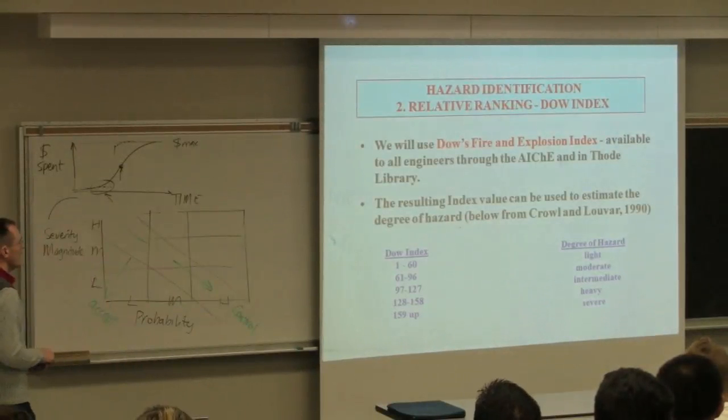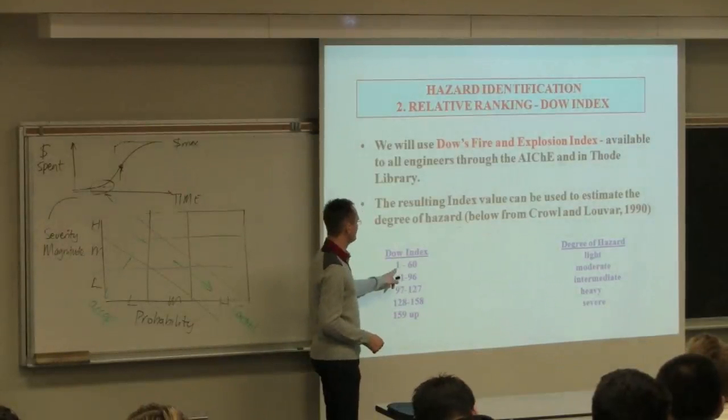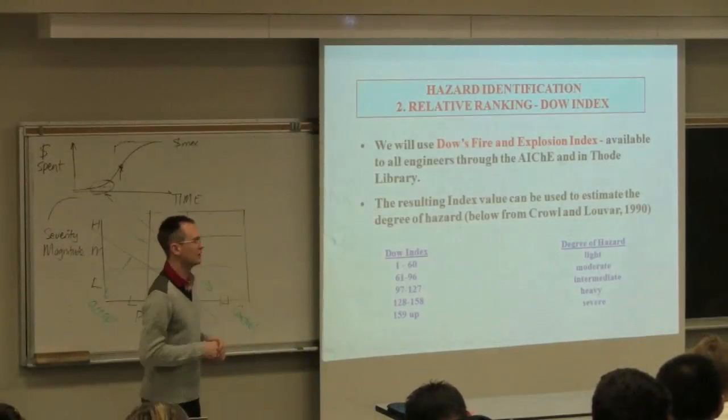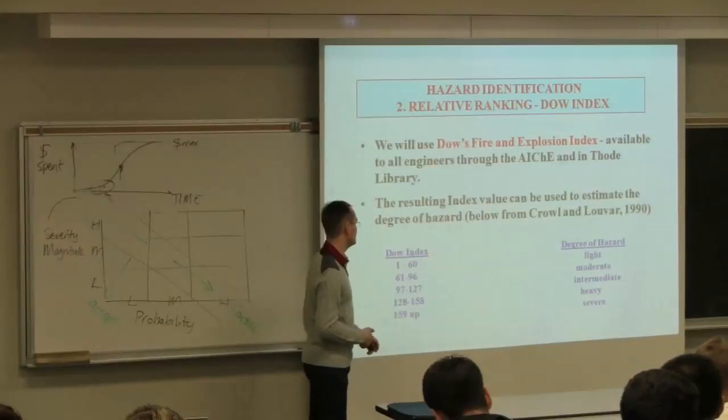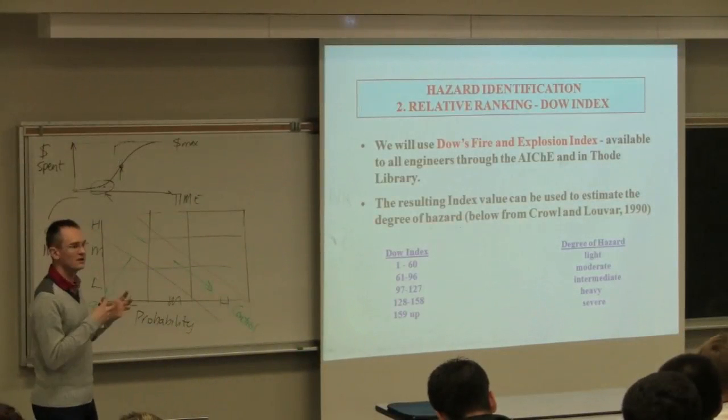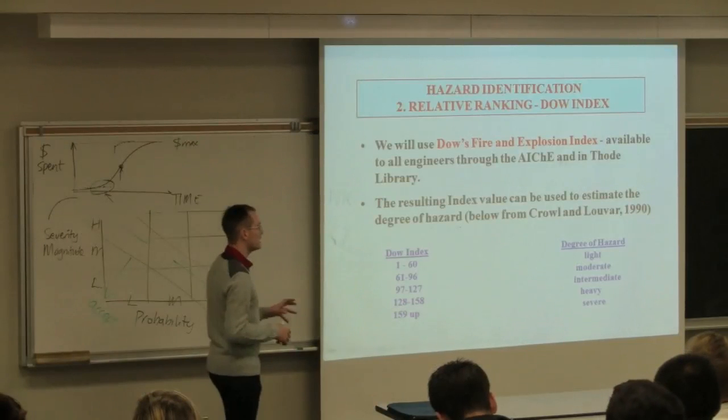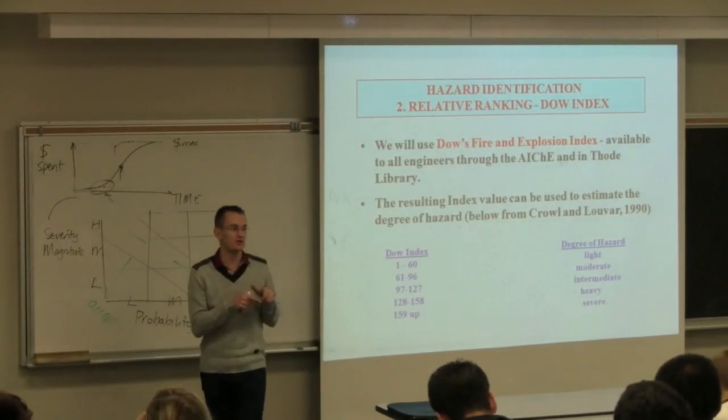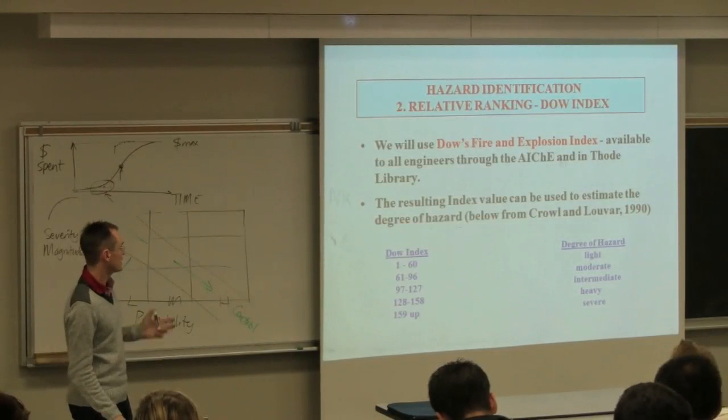There's three indexes available. We'll just look at one. It's called the Dow Fire and Explosion Index. You can get this index through the AIChE. It's also available in the library. And there's a simple ranking as follows. If your ranking for your area of the flow sheet you're considering is between 1 to 60, your hazard is considered light. Then there's 61 to 96, 97 to 127 is intermediate, and then there's heavy and severe at the end there.